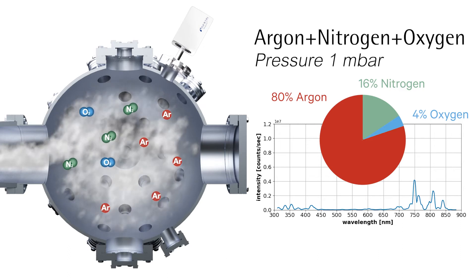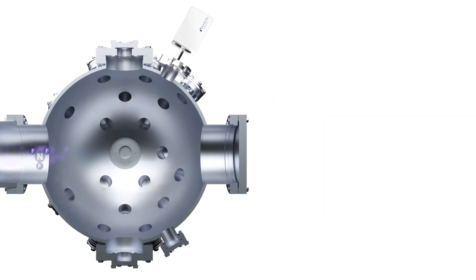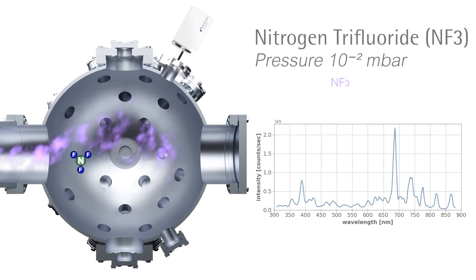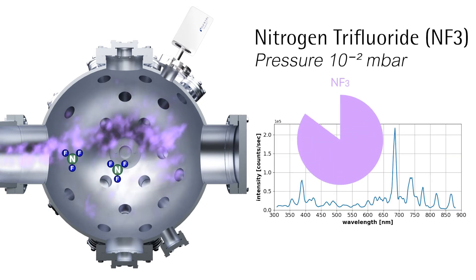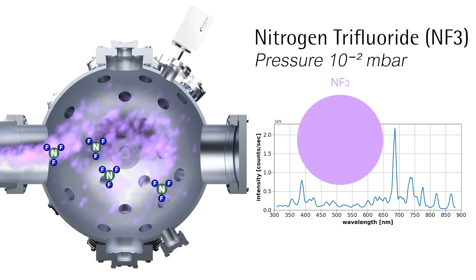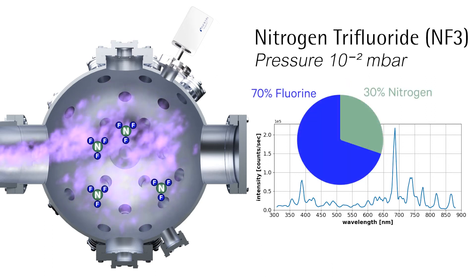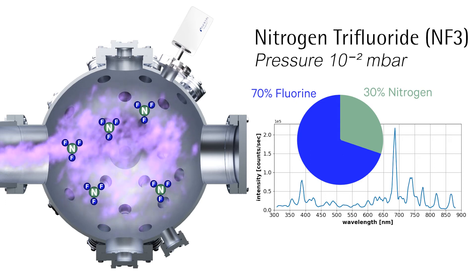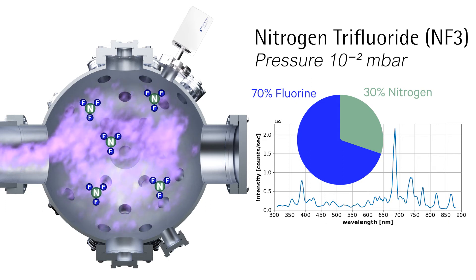At the end, the system is pumped down and purged with NF3. The NF3 spectrum is measured and the molecular components nitrogen and fluorine are detected, since the molecules are split up in the plasma generated in the sensor.